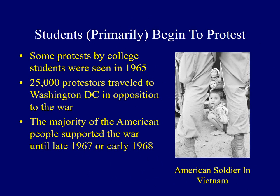In 1965, we see the first protests against American involvement in the Vietnam War, primarily associated with college students. The best example took place in Washington, D.C., when about 25,000 protesters converged on the nation's capital. While high-profile leaders such as Robert F. Kennedy and Martin Luther King Jr. joined protesters in later years, the majority of the American people supported the war until late 1967 or early 1968.